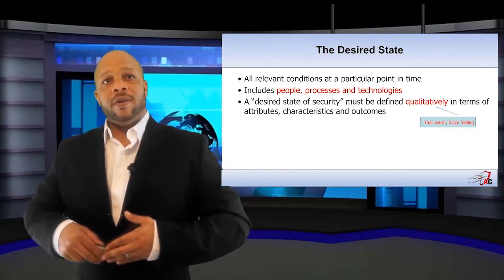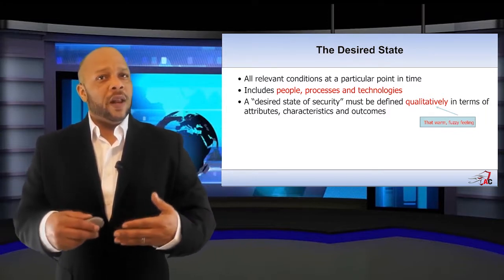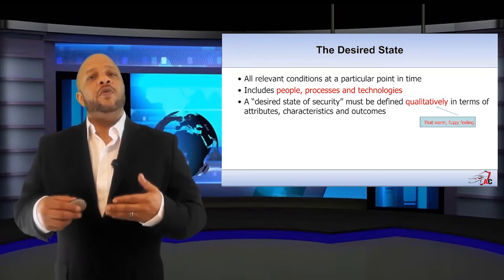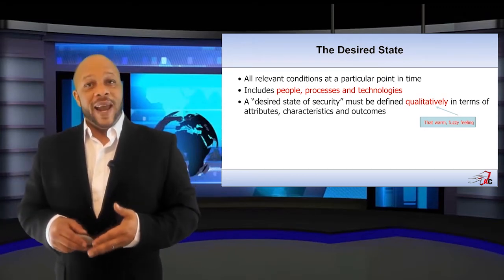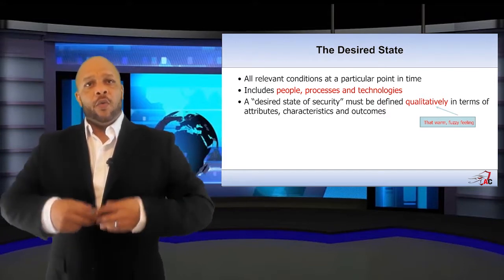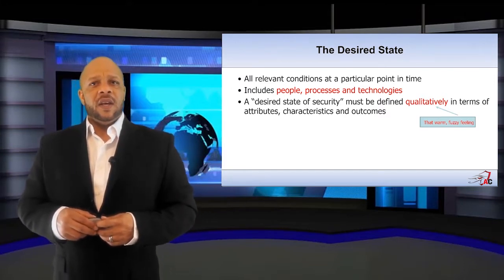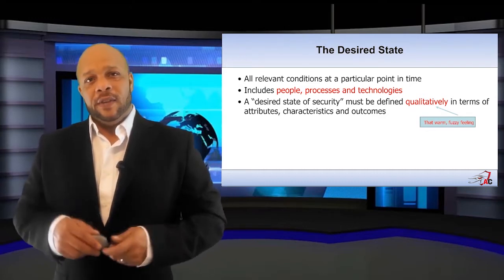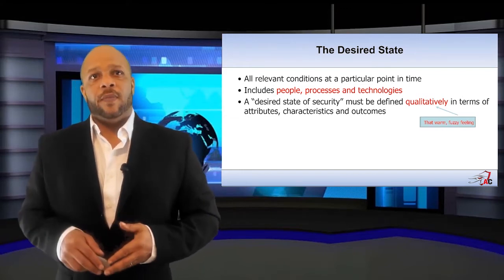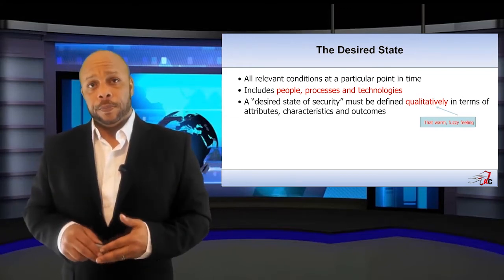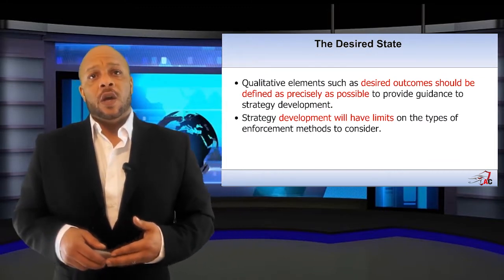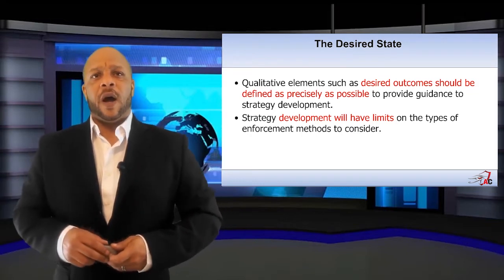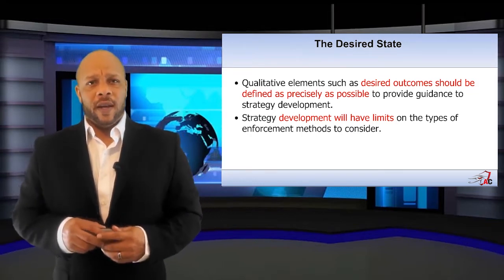When beginning to look at our desired state, we need to take into account all relevant conditions at a particular point in time — this includes the totality of the system, the people, the processes, and the technologies. Once we identify what that desired state is, it must be defined qualitatively. We want to make sure that the desired outcomes are defined as precisely as possible so we know the target we're trying to hit.